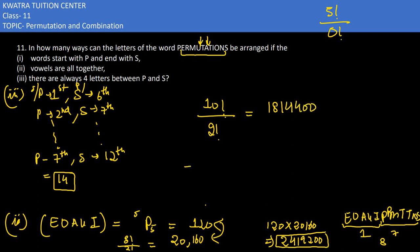So finally, your answer for the third part is 14 into 18,14,400. So multiplying these two values, you will get 25,401,600. So that's your answer for the third part.